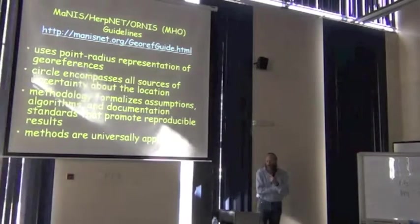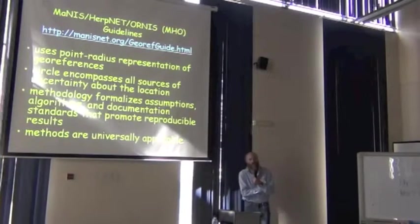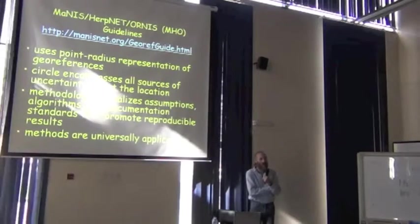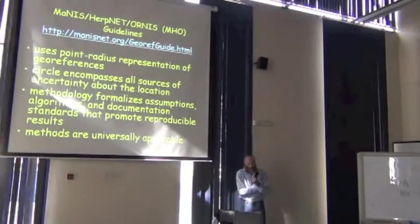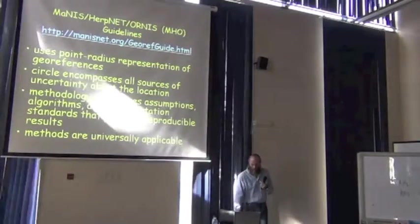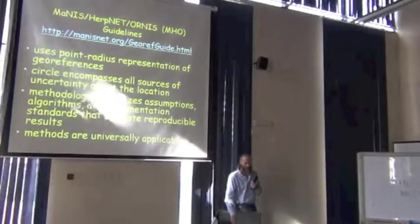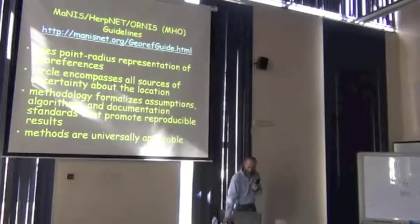So the idea here is that we use this point-radius method, and a circle of the point radius would encompass all of the possibilities of where the location could be. So that's why we call it the maximum uncertainty. We tried to make sure that when we drew a circle, there's no possibility that the location was outside of it.